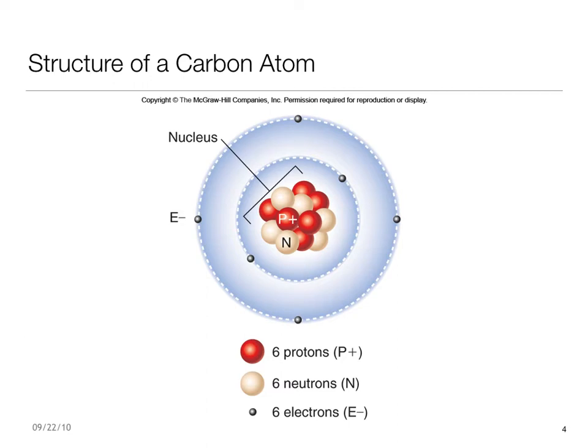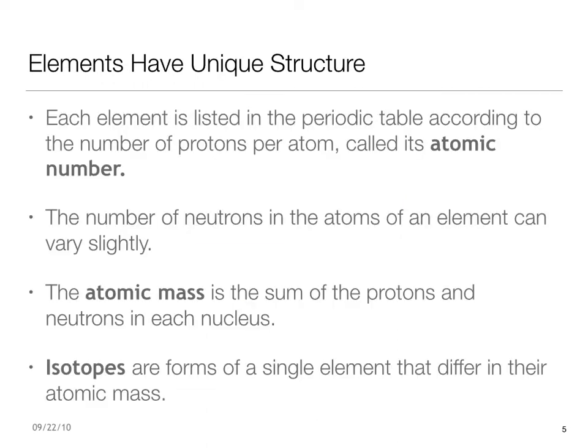Many scientists say electrons should be shown as a fuzzy cloud of wave energy, rather than individual particles. Each element is listed in the periodic table according to the number of protons per atom, called its atomic number. The number of neutrons in the atoms of an element can vary slightly. Thus, an atomic mass — which is the sum of the protons and neutrons in each nucleus — also can vary.